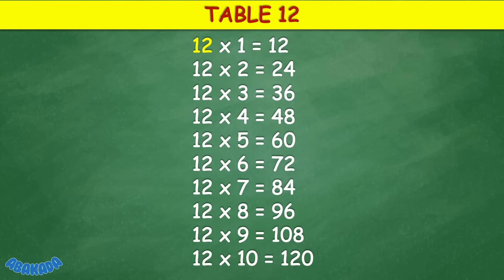Table 12: 12 times 1 equals 12, 12 times 2 equals 24, 12 times 3 equals 36, 12 times 4 equals 48, 12 times 5 equals 60, 12 times 6 equals 72, 12 times 7 equals 84, 12 times 8 equals 96, 12 times 9 equals 108.